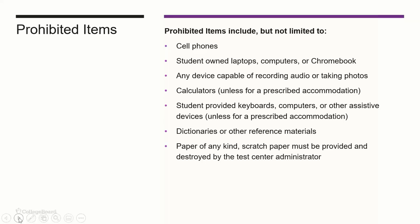Prohibited items for on-campus testing include cell phones, student-owned laptops or Chromebooks — though exceptions have been made during COVID for students at home. Calculators are not allowed unless there's a prescribed accommodation; calculators are built into the ACCUPLACER platform and appear as an icon when permitted for a specific question. Dictionaries and reference materials are not allowed, and scratch paper must be destroyed after each test session.